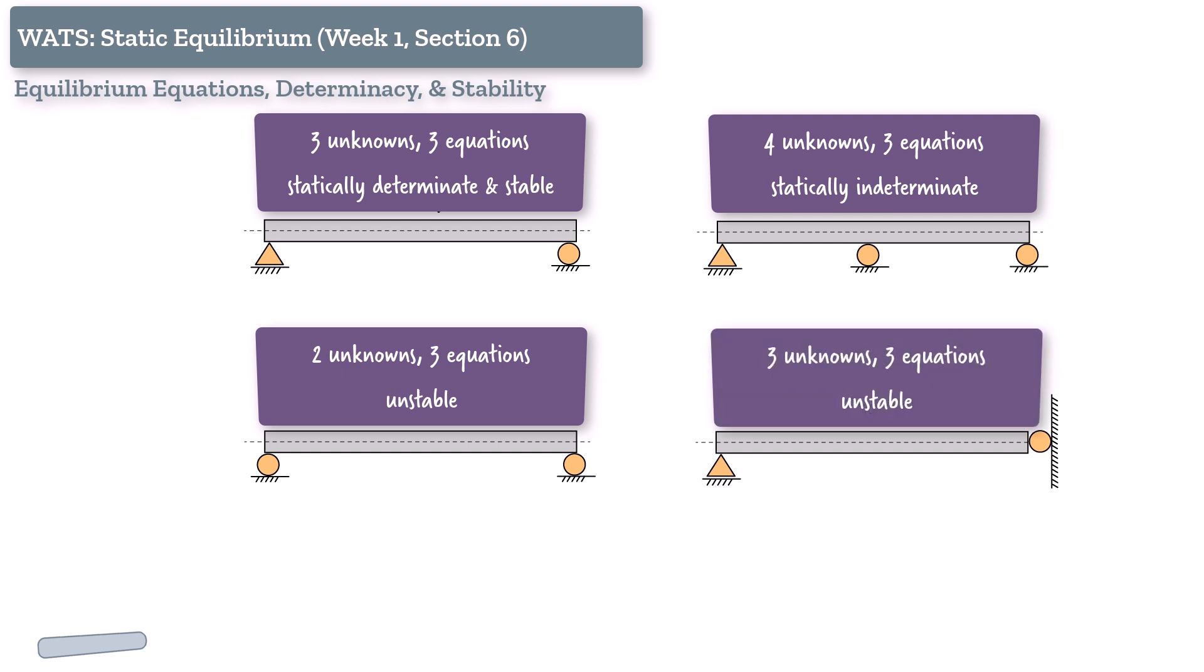in example four, we had a pin and a roller again, but they were placed in a way that made the system geometrically flawed. Even though we had three equations and three unknowns, the moment equation couldn't be satisfied. That's another form of instability. One where the math fails because the structure lacks proper restraint or geometric coherence.